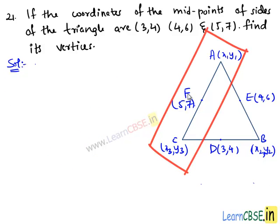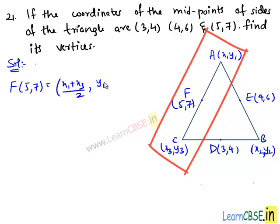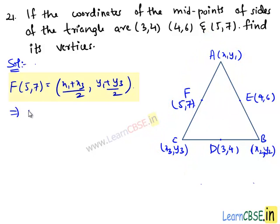The point F is the midpoint of AC. That is, F(5, 7) equals (x1+x3)/2, (y1+y3)/2. This implies, equating the x-coordinates, we get x1 + x3 = 10, and equating the y-coordinates, we get y1 + y3 = 14. Let it be equation number 3.